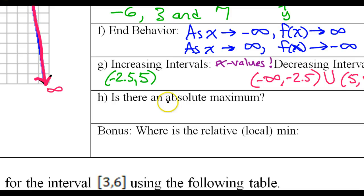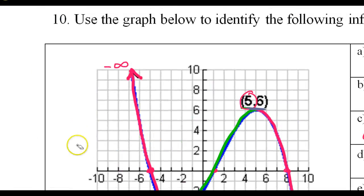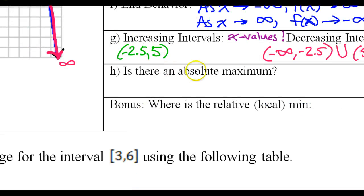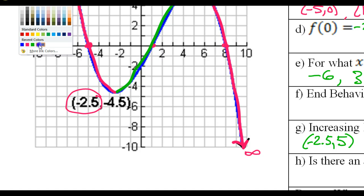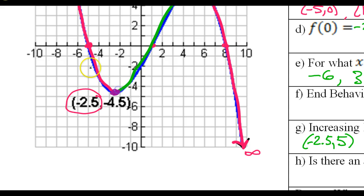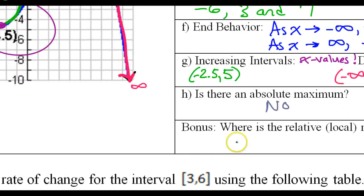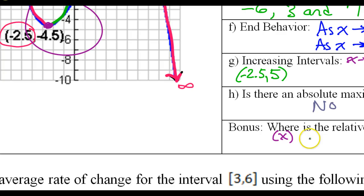Is there an absolute maximum? No — there's no absolute max because this graph goes up forever, so no matter what point you name, there's always a point higher. Where is the relative or local minimum? Even though it's not the absolute minimum, there is a local minimum right here because it is the lowest point in its neighborhood. When they ask where, they want an x value, so the local minimum is at x equals negative 2.5.